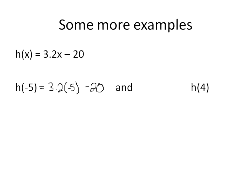My x value in this case is negative 5. So I'm going to multiply 3.2 times negative 5, which will give me my function of h at the point negative 5 is equal to negative 16 minus 20. There we go.